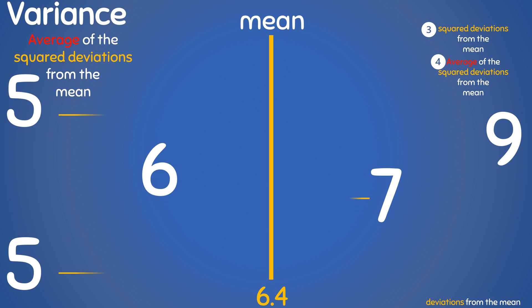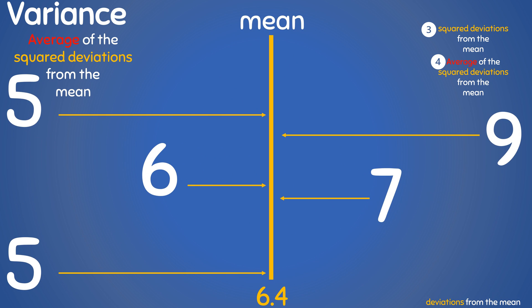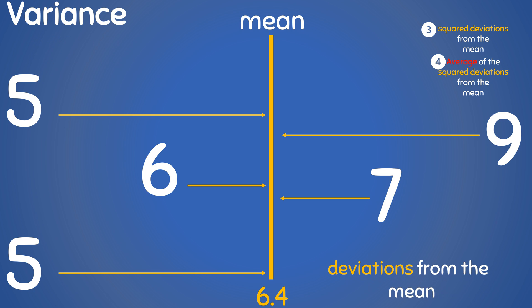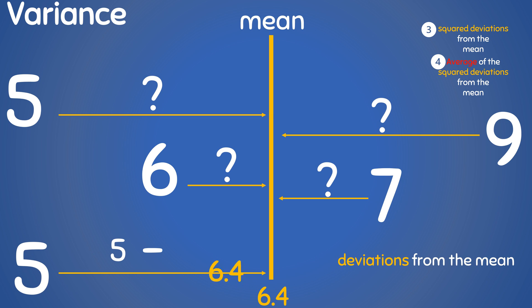The question is, for each data point, how far away from the mean is it? In other words, what is the deviation of each data point from the mean? To find this, we will simply subtract the mean from each point to know the distance or the deviation from the mean. So for this first point, we say 5 minus 6.4 and we get minus 1.4. So the deviation of this first point from the mean is minus 1.4. Let's do the same for all the data points.